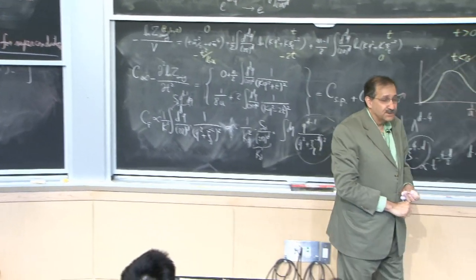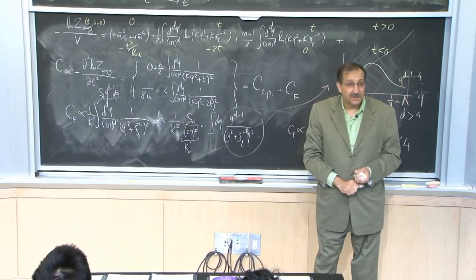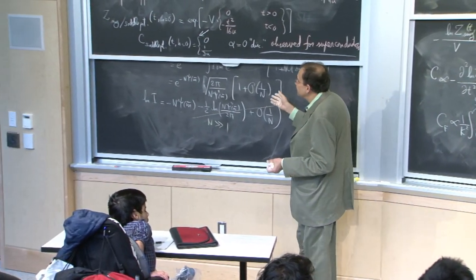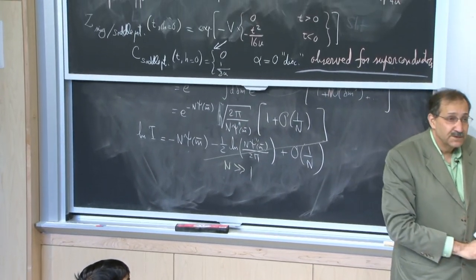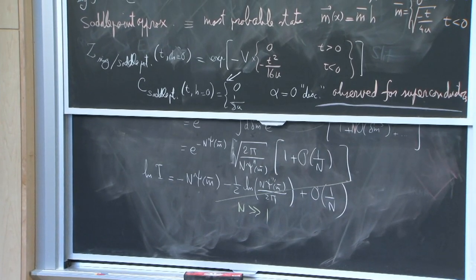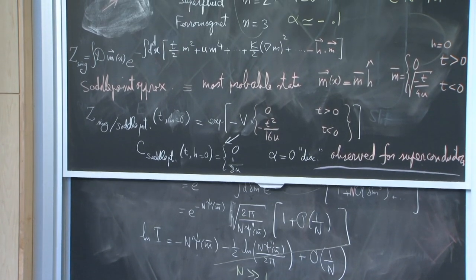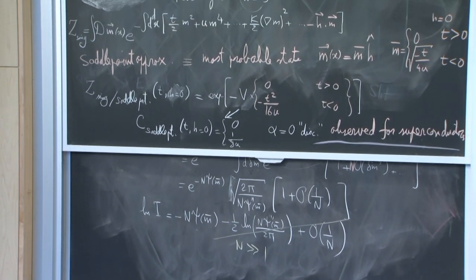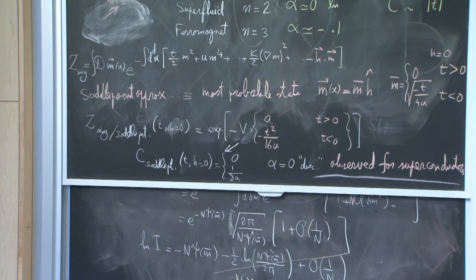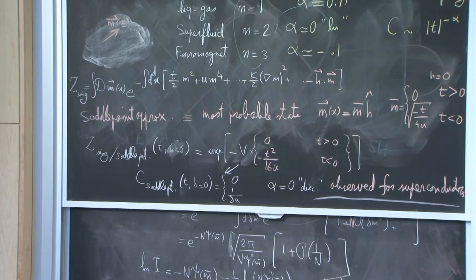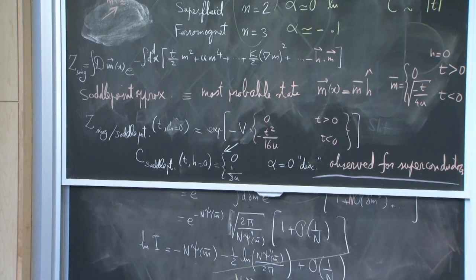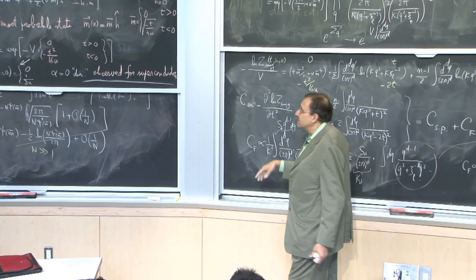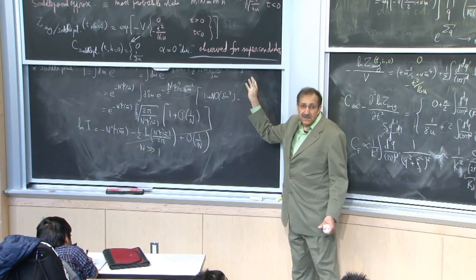This answers our original questions. For all phase transitions we constructed a Landau-Ginzburg theory and used the saddle point to compute heat capacity singularities. The result works extremely well for superconductors because fluctuations are not important there — the most probable state gives a good description. For superfluid helium, liquid gas, etc., fluctuations are very important, and the saddle point starting point is simply not good enough.